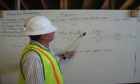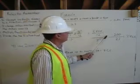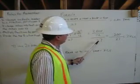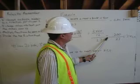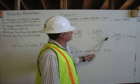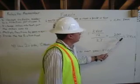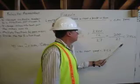2400 divided by 12 gives us 200. We carry over 27. Now we divide 200 by 27, which gives us 7.4 cubic yards.